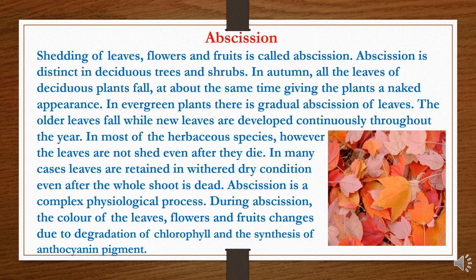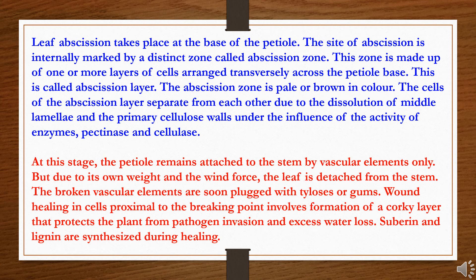Abscission is a complex physiological process. During abscission, the color of the leaves, flowers, and fruits changes due to the degradation of chlorophyll and the synthesis of anthocyanin pigment. Leaf abscission takes place at the base of the petiole. The site of abscission is internally marked by a distinct zone called the abscission zone, made up of one or more layers of cells arranged transversely across the petiole base — this is called the abscission layer. The cells of the abscission layer separate from each other due to the dissolution of the middle lamella and primary cellulose walls under the influence of enzymes pectinase and cellulase. At this stage, the petiole remains attached to the stem by vascular elements only, but due to its own weight and wind force, the leaf is detached. The broken vascular elements are soon plugged with tyloses and gums.